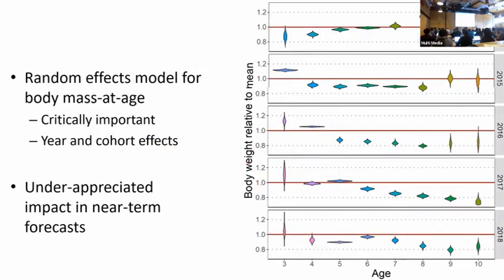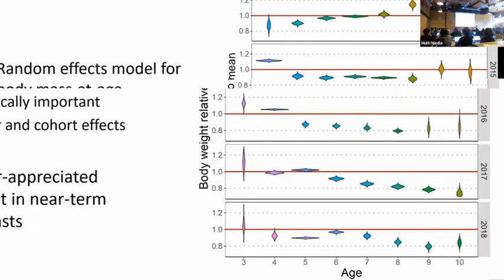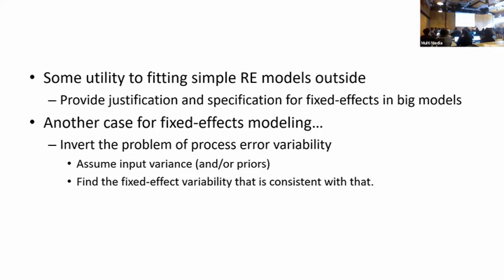In single-species models we underappreciate the importance of what Rick McGarvey was talking about - the population-weighted age going forward. Average weights are important. I do a random effects model outside the main model, estimate the variances, bring them into the big model, and use those variances as fixed-effect penalty weights. That's a really important and good way to do something that's not easy in a standard package but very easy in your own development.